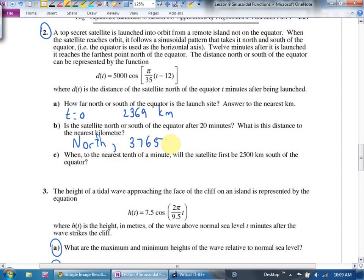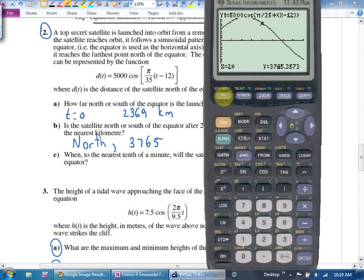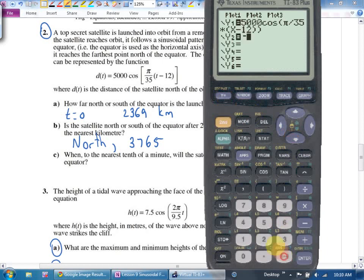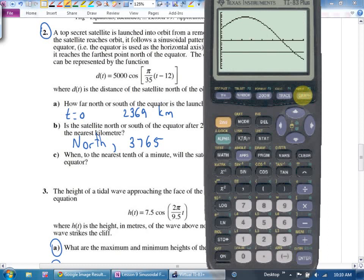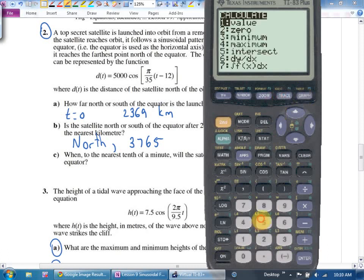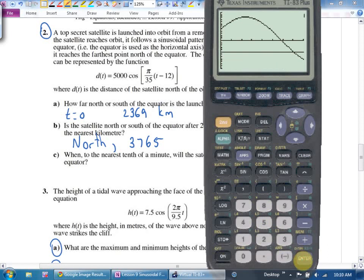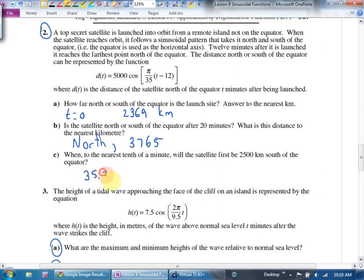Is the satellite north or south of the equator after 20 minutes? Minutes is an X value, so again I'm going to use the trace feature. It's north of the equator. In fact, it doesn't get south of the equator until, I'm guessing, 35 minutes in. Oh no, I got a phase shift, probably 35 plus 12, probably 47 minutes in. What was the distance to the nearest kilometer? 20 minutes in, 3,765.